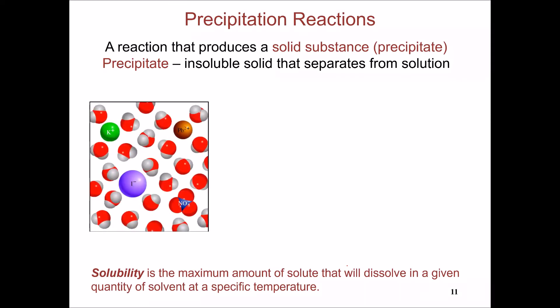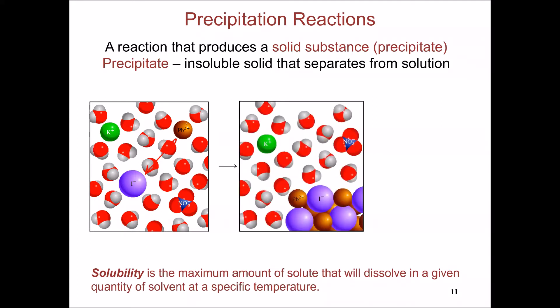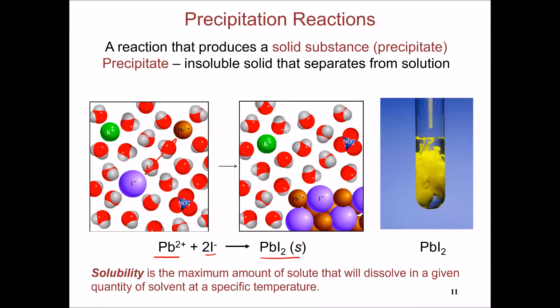An example: when you combine lead nitrate and potassium iodide together, you will have a possible combination between lead and iodide. This combination has a very low solubility, which is why it starts separating or depositing out of the solution as a solid substance or precipitate. The description for this process is the combination between lead ions and iodide ions to make lead iodide solid, which appears as a yellow precipitate that deposits in the solution.